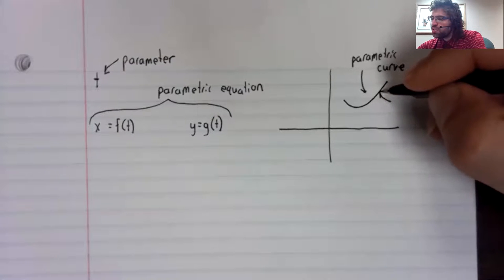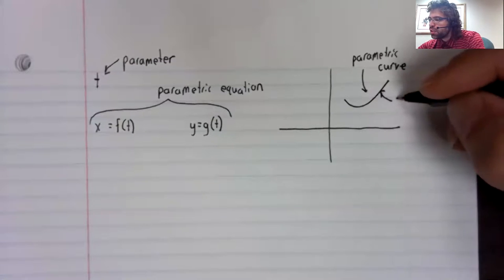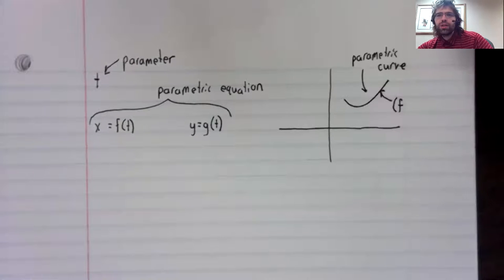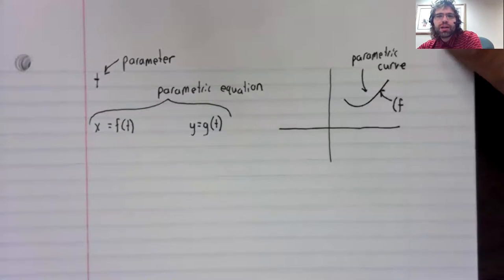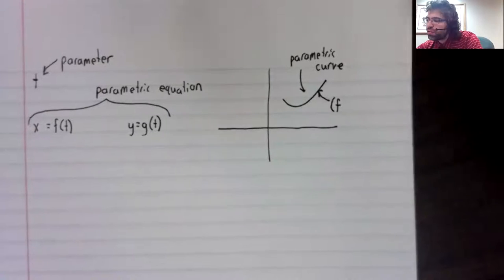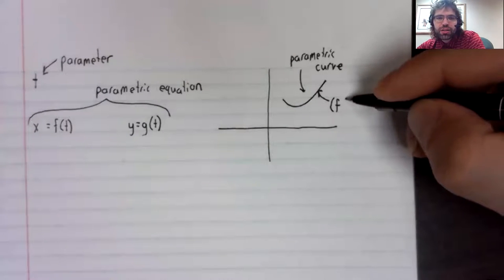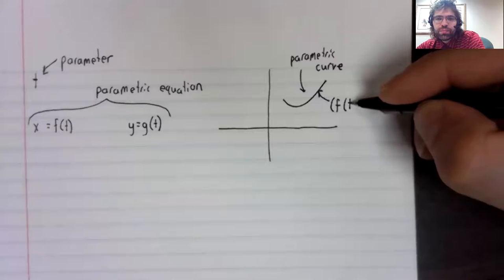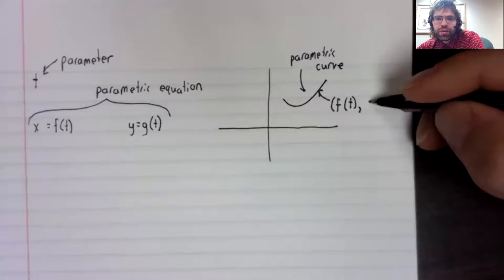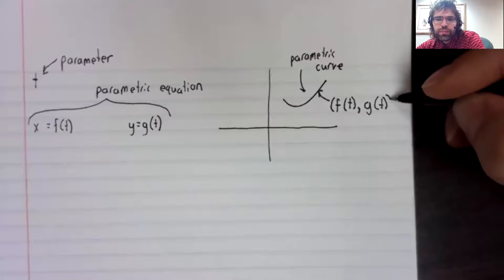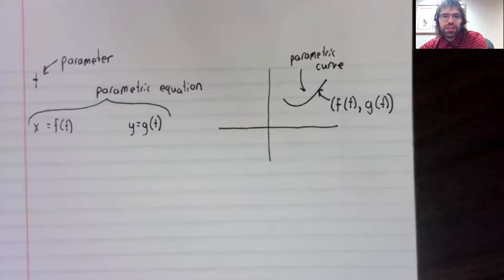And the points on a parametric curve are the points, let me make sure my portrait isn't covering this. The points on the parametric curve are the points of the form f of t, comma, g of t.